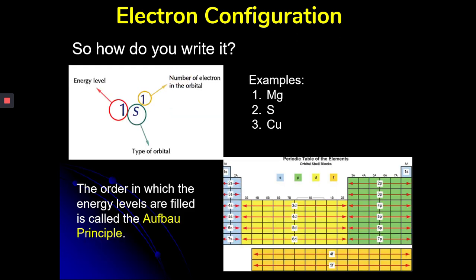So how do you write electron configuration? The large number is your energy level, then you have your sub-level, and then the number of electrons in that orbital. The order in which the energy levels are filled is called the Aufbau principle. So if we look at magnesium, magnesium on the periodic table is number 12, so it has 12 protons. It's found right here. So we would say 1S2, 2S2. Keep coming across, second row still, 2P6. 3S2. So there's the electron configuration.